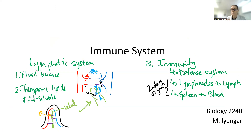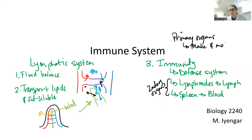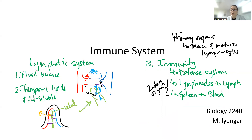The secondary organs are going to store our lymphocytes and macrophages until they get activated. The primary organs are going to make and mature lymphocytes. The main organ that makes all the white blood cells is red bone marrow — it's more of a tissue, but we'll call it an organ. The other primary organ is the thymus gland, which helps mature T cells, whereas B cells continue to mature in the bone marrow.